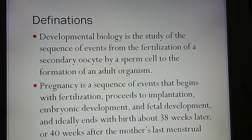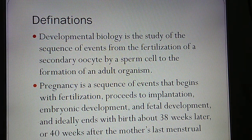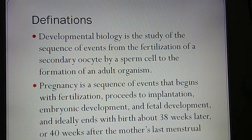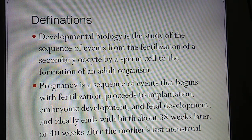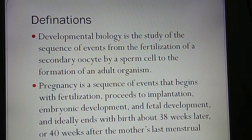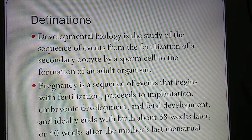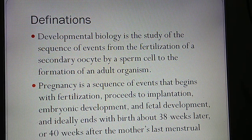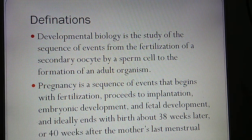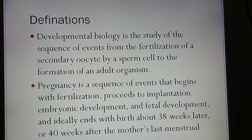Ideally, pregnancy ends with birth about 38 weeks later, or 40 weeks after the mother's last menstrual cycle. In a woman's body, this entire period from fertilization — including implantation, embryonic development, and fetal development — is called pregnancy.